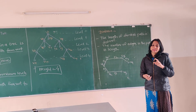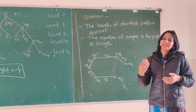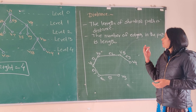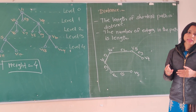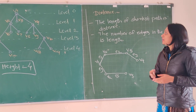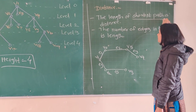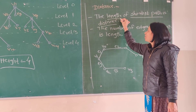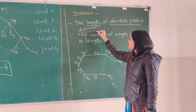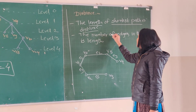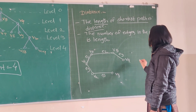In the same way we can calculate distance. We calculated distance in a graph using the shortest path. Similarly, when finding distance in a tree, that distance should be the shortest distance. The length of the shortest path between nodes is the distance, where length is the number of edges in the path. Suppose we have this particular tree and want to find the distance between V1 and V5.